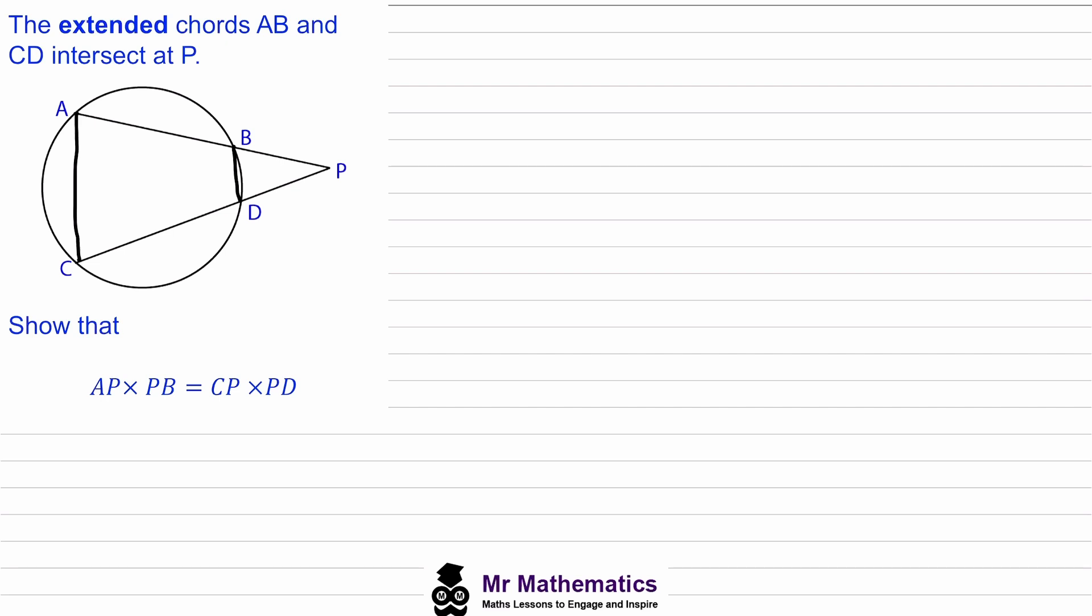So now we have two triangles. We've got a small one from P to D to B, and we've got a bigger one from P to C to A. And we know that this angle P is common to both triangles.